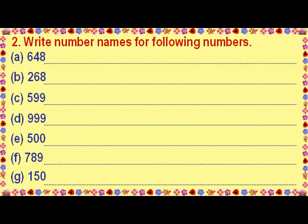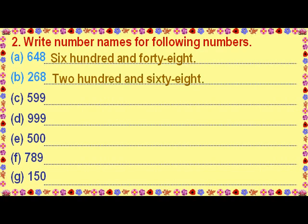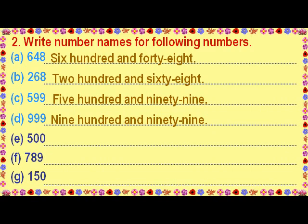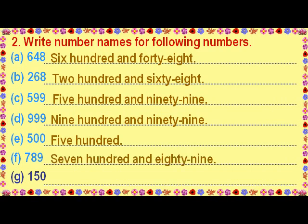Question 2: Write the number names for the following numbers. Answer A: 648. Answer B: 268. Answer C: 599. Answer D: 999. Answer E: 500. Answer F: 789. Answer G: 150.